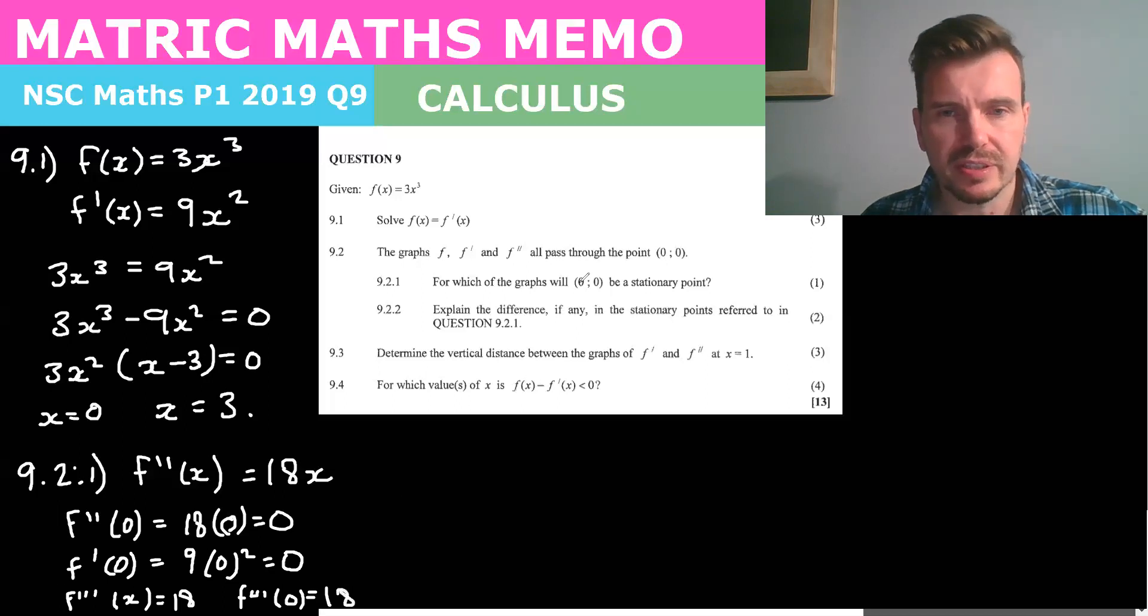So we know that f double dash is not a stationary point so we know that it's a stationary point for f of x and f dash of x.